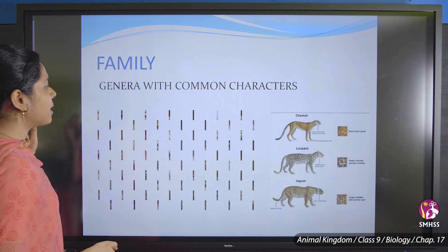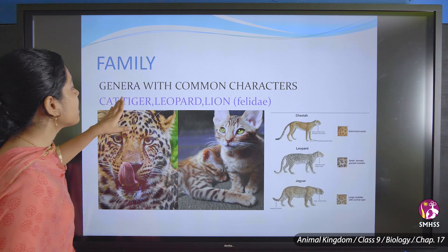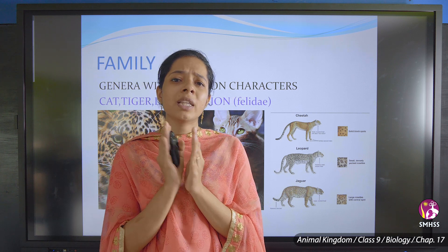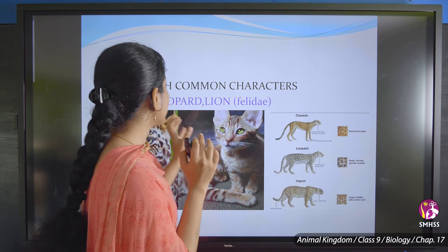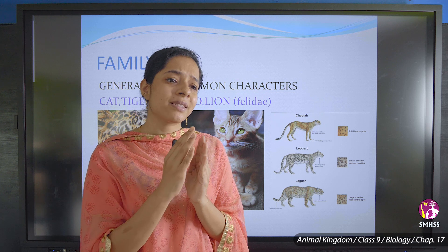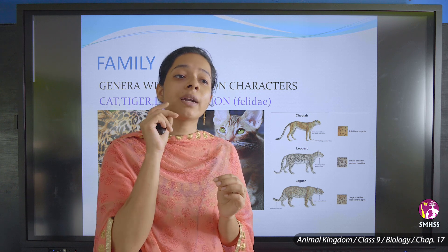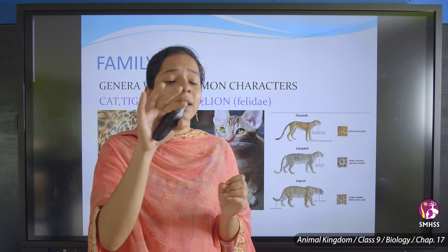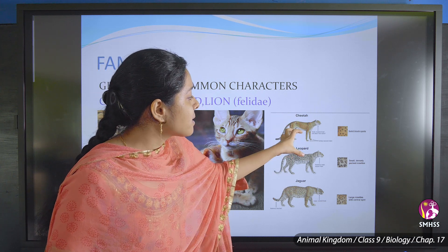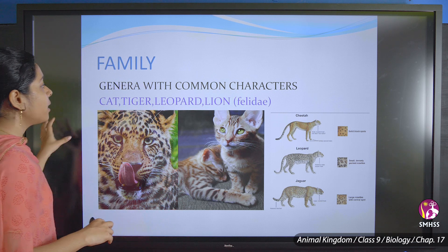Next comes the family category, which is based on general common characters. For example, when we see a cat, it resembles a tiger. The cheetah, leopard, and jaguar all have similar skin shades and characters. That comes under the category called family, and they are called Felidae.